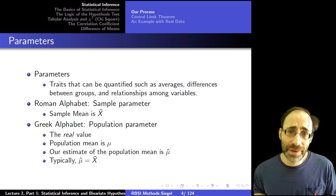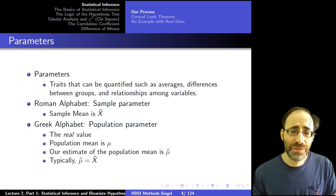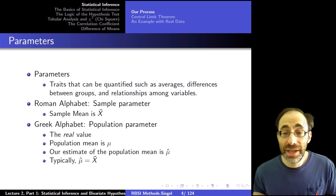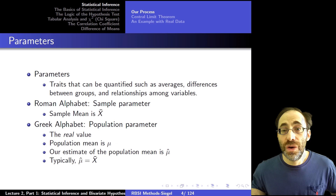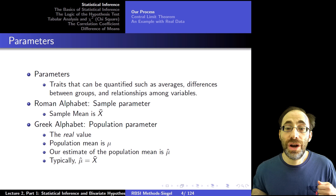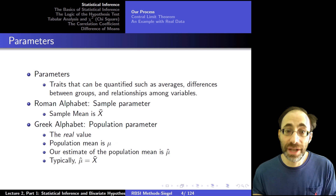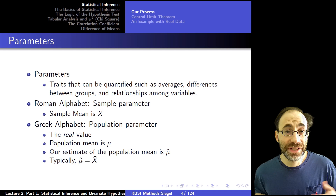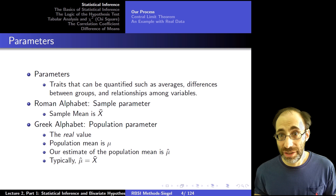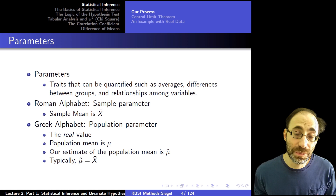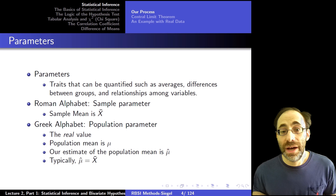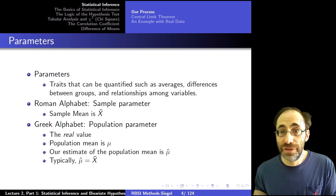Parameters are traits that can be quantified in some sample or population. These include things like averages, differences between groups, or relationships between variables. Typically we use the Roman alphabet for sample parameters — like the sample mean x-bar — and we use the Greek alphabet for population parameters. So the mean for the population would be mu, the Greek letter. Population parameters are the real variables; the sample parameters are what we use to infer details of the population.